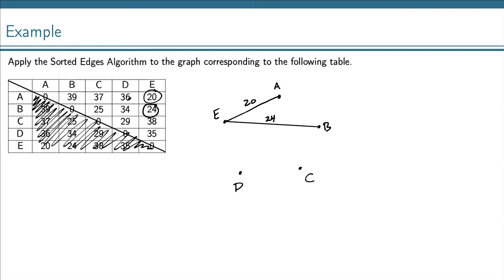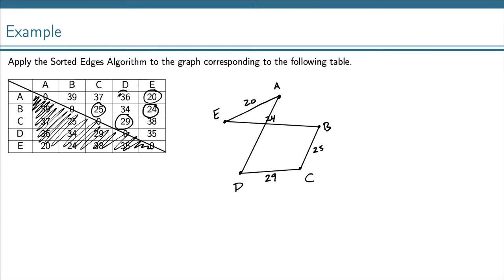From what's left, the next smallest weight is 25 from B to C, so we draw that — we're still not breaking any rules. After 25, the next smallest is the 29 from D to C, so we add that in with a weight of 29. Now we've visited every vertex, so all that's left is to connect the two endpoints — that's from A to D with a weight of 36. There's our graph produced by the sorted edges algorithm.